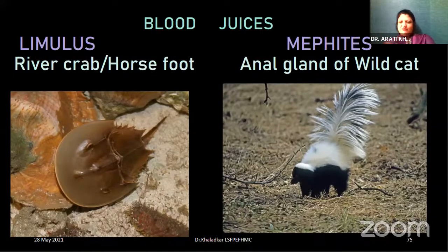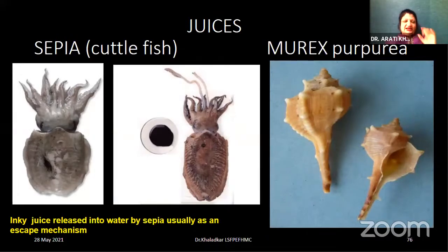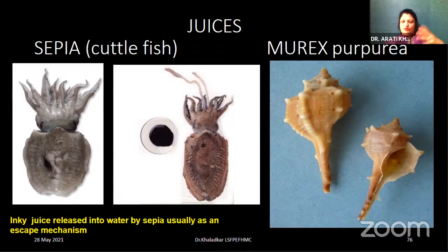Next for juices: we have a unique fish — the cuttlefish or Sepia. Sepia officinalis has an inky juice in its abdominal sac. When there is some type of enemy, it uses this ink as an escape mechanism. The inky juice of the cuttlefish is a very important example. One more example for juices is Murex purpurea, the purple fish.